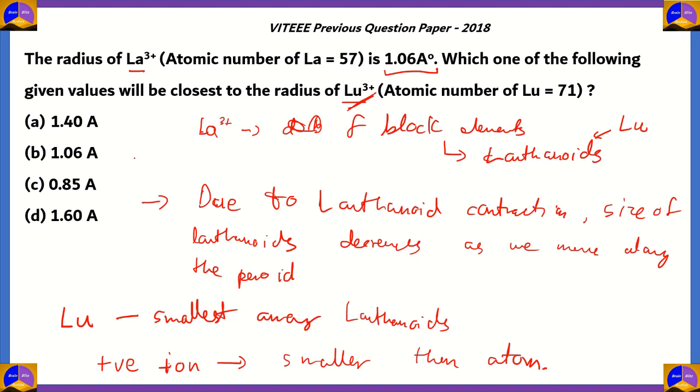Among the four options, there is only one option which is less than 1.06 angstroms—option C, 0.85 angstroms. Therefore, 0.85 angstroms is the correct option for this question which was asked in 2018. All the other values are greater than or equal to La³⁺, and since we are dealing with lanthanoid contraction, the radius of lutetium has to be less than 1.06 angstroms. Option C is the correct option.